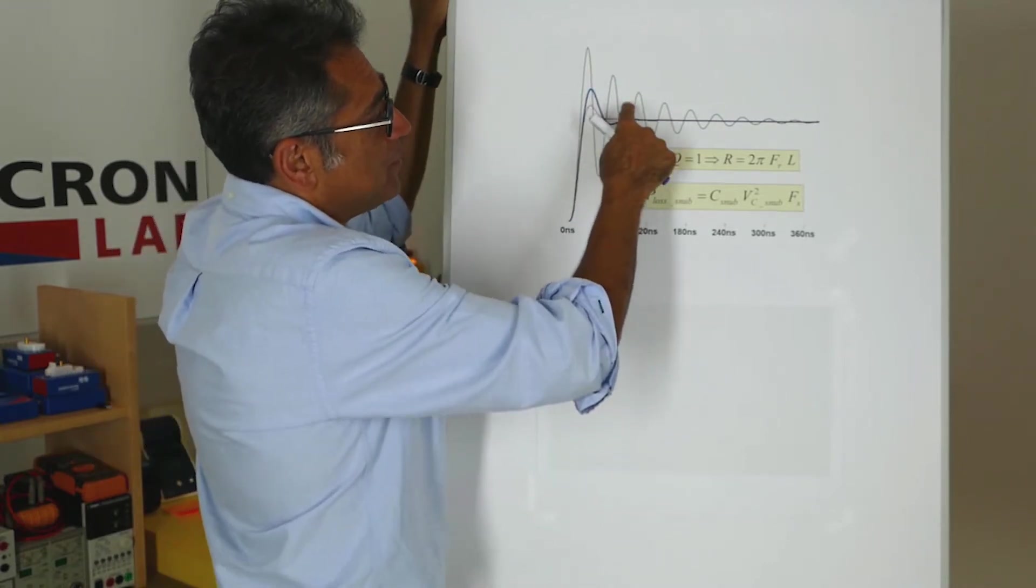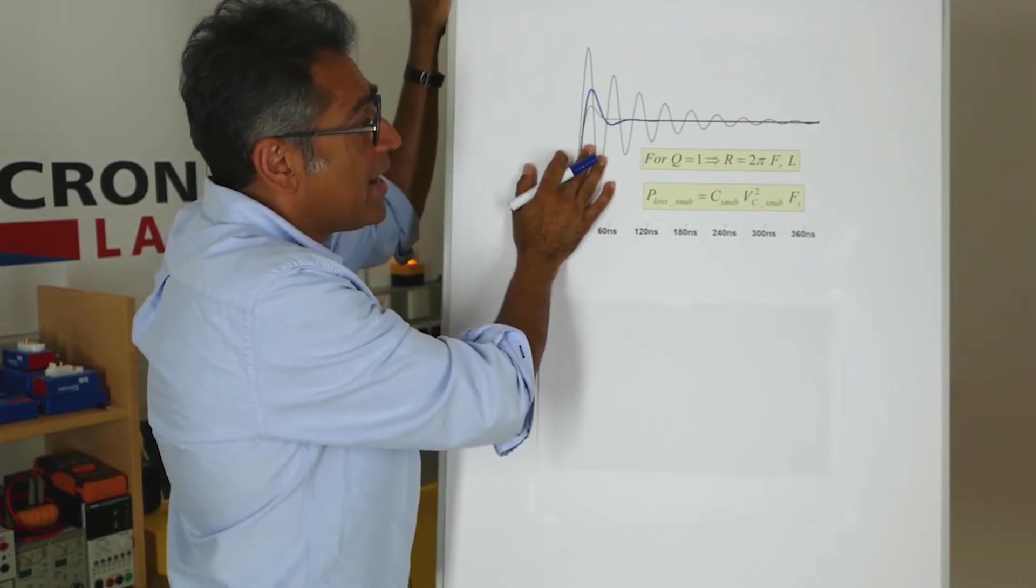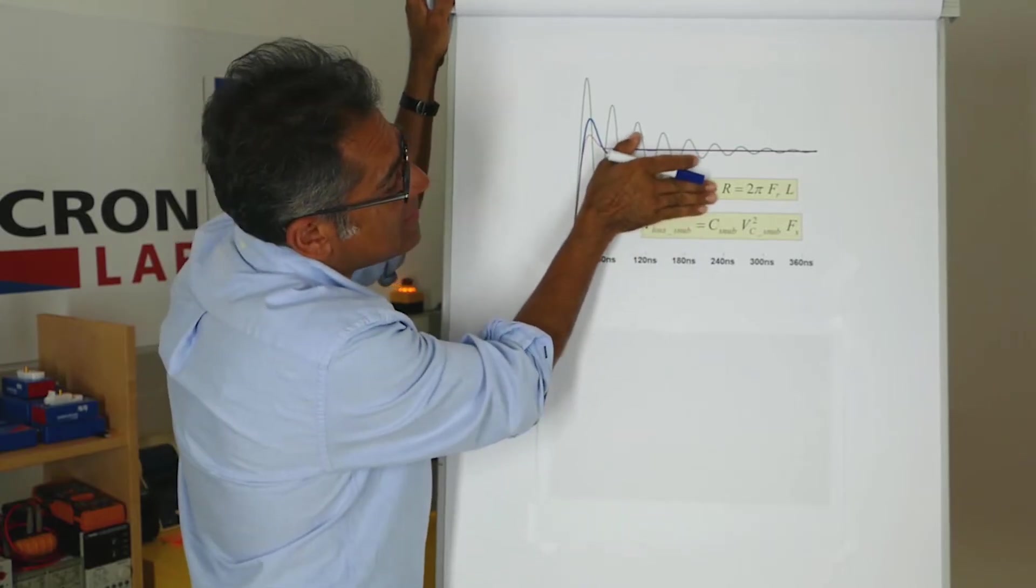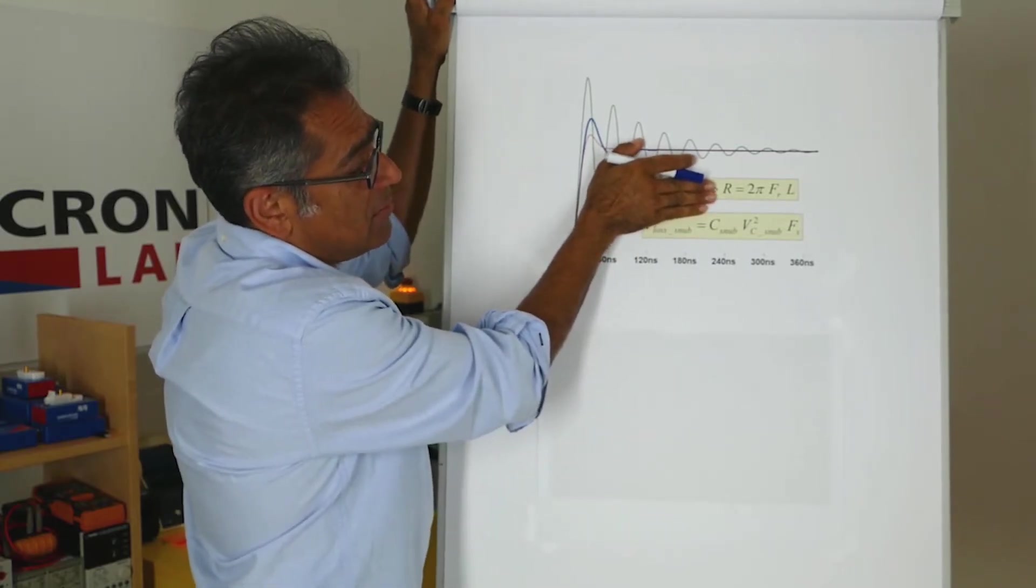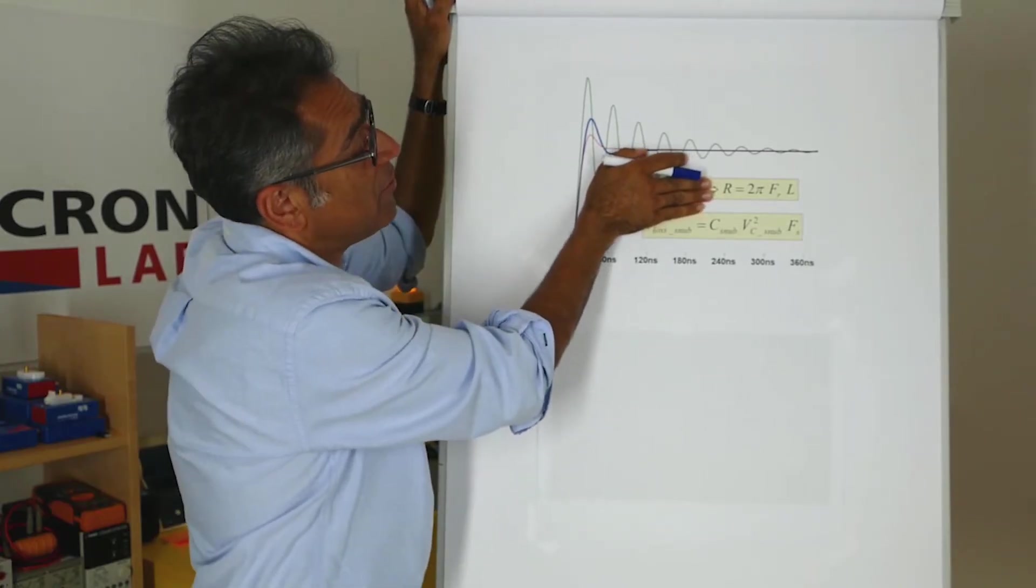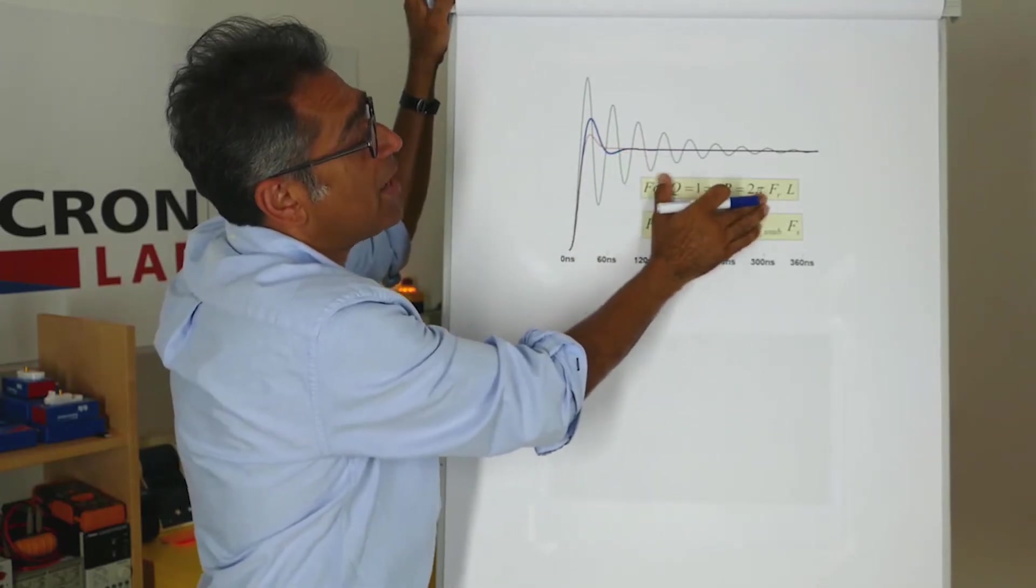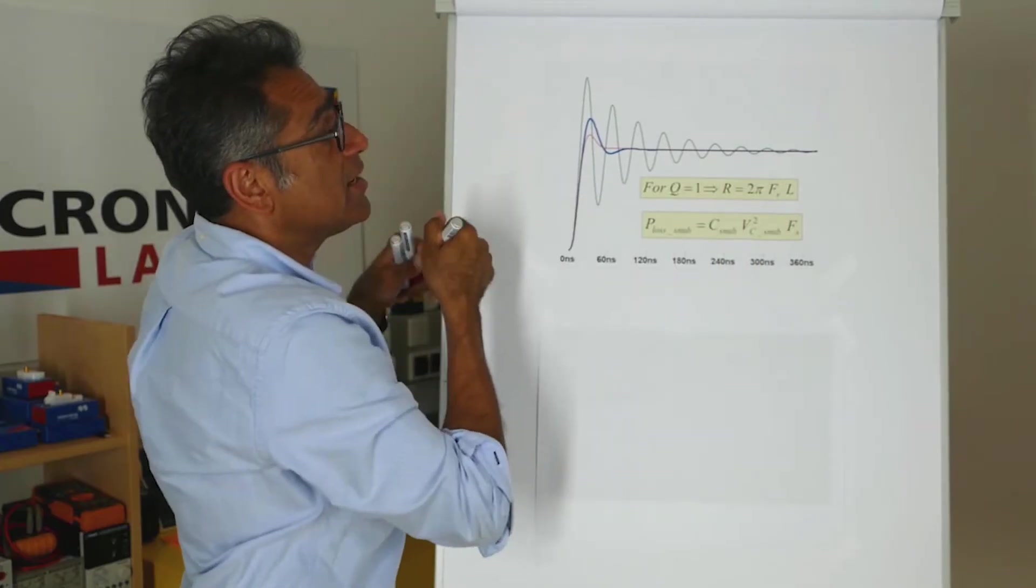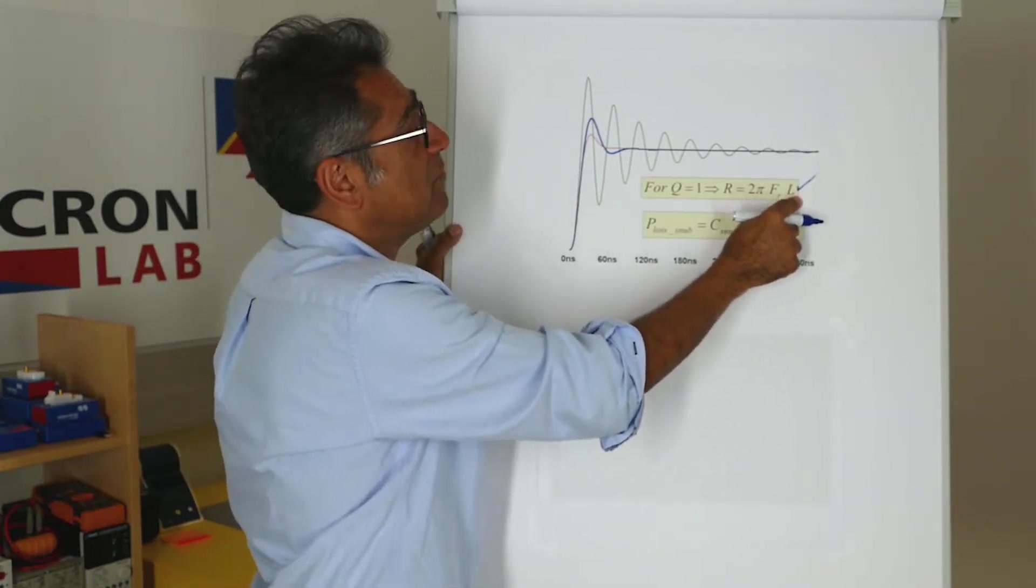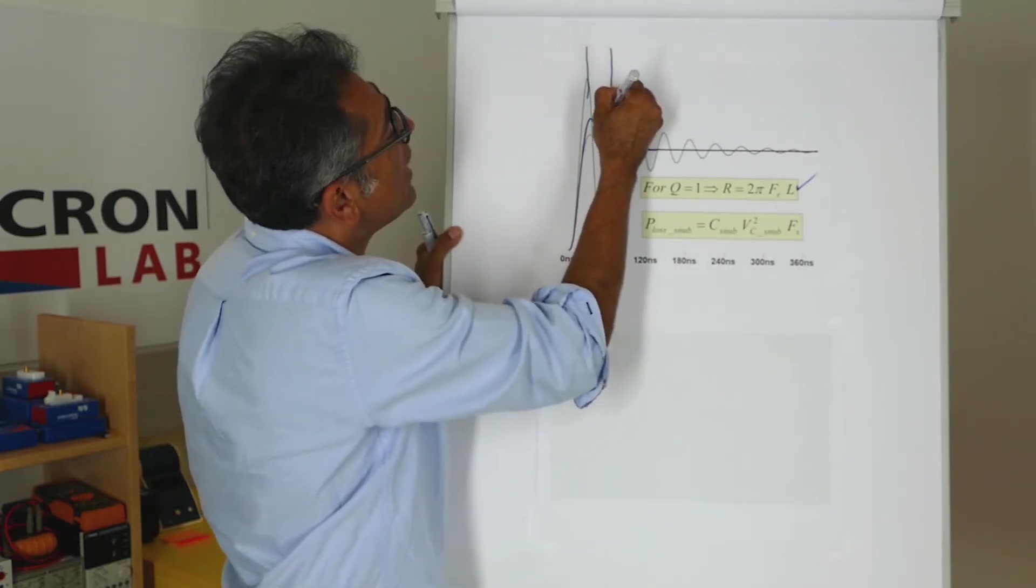On the green trace here is the ringing, which should be very little damping. This is a simulation. If I assume that Q is equal to 1, then I can simplify all the equations that I gave you into this. Again, please don't worry, we've got a spreadsheet that you can download that will design everything for you. But for a Q of 1, R has to be equal to 2π times resonant frequency times the leakage inductance. This one we know because we measured with our Bode 100 in an earlier video. This one we can easily measure using an oscilloscope from there to there.